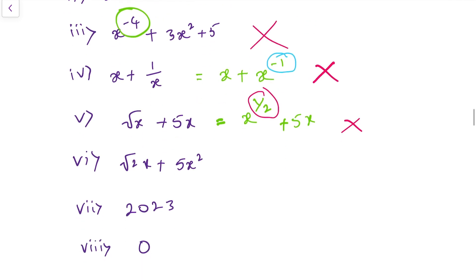What about root 2 times x plus 5x square? If you observe the difference between these two questions: here, the root is for the alphabet — the variable. But here, the root is for the number or constant. So here, power is 1 and here power is 2. Both powers are whole numbers, so this is a polynomial.